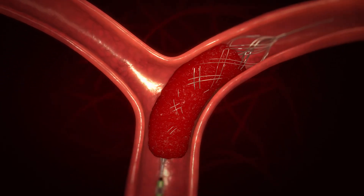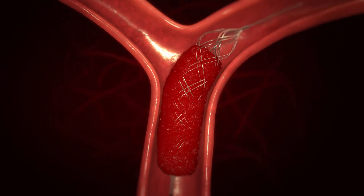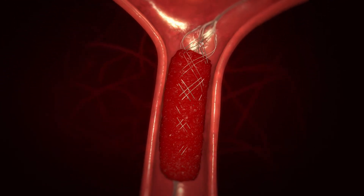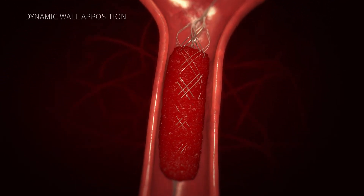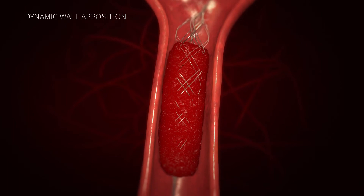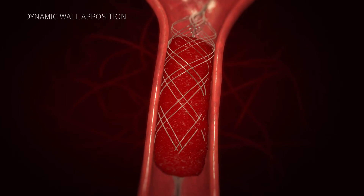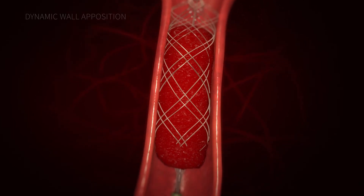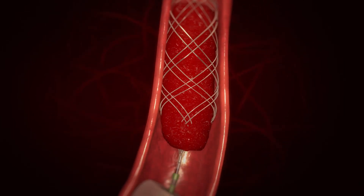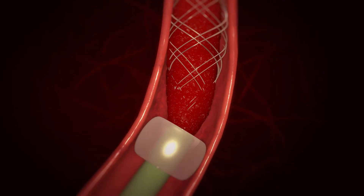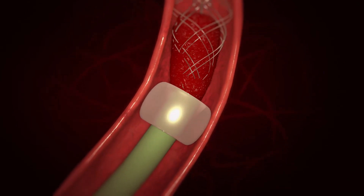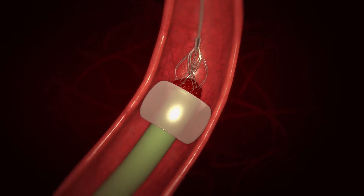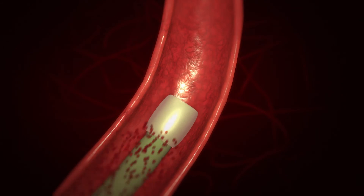During clot removal, net diameter can be adjusted by the physician to optimize wall apposition and ensure a perfect fit during transitions in different artery dimensions. This reduces the risk of thrombus disengagement, fragmentation, and distal emboli.